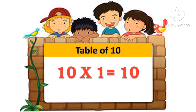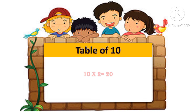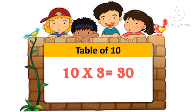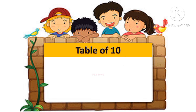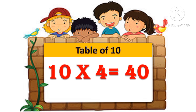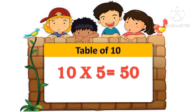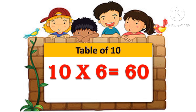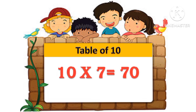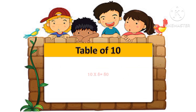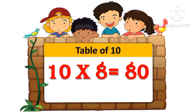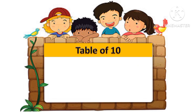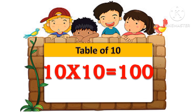Table of 10: 10 one's are 10, 10 two's are 20, 10 three's are 30, 10 four's are 40, 10 five's are 50, 10 six's are 60, 10 seven's are 70, 10 eight's are 80, 10 nine's are 90, 10 ten's are 100.